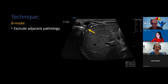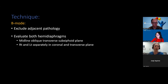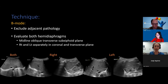B-mode sonography is performed with a curvilinear transducer to evaluate the upper abdomen and lower chest, done to exclude adjacent pathology — for example, a nine-month-old with a retroperitoneal teratoma with gliomatosis peritonei who was found to have a supradiaphragmatic lesional deposit. Both hemidiaphragms are then evaluated, including scanning the midline in an oblique transverse sub-xiphoid plane to obtain comparative imaging of both sides. Then both the right and left are separately interrogated in the transverse and sagittal planes to assess configuration and movement.